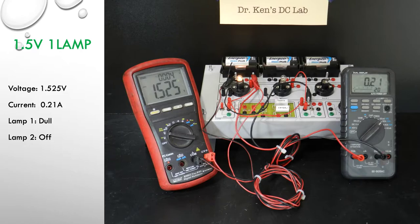So we're going to take our first reading now. So here we are at 1.5 volts with lamp 1. And you'll notice we're pulling 1.525 volts and about 200 milliamps or 0.21 of an amp. And you'll notice that the lamp itself is reasonably dull. It's illuminated but it's not as bright as it could be. And of course our second lamp is not illuminated at all because it's off.